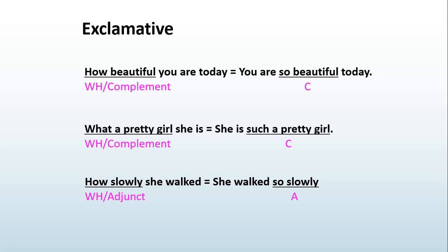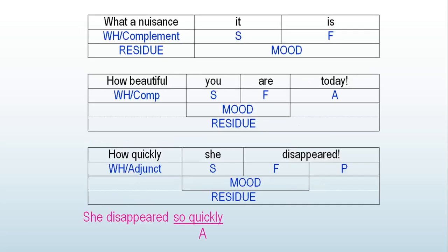When we want to change it into the form of boxes, the usual boxes that we do for exercises, it will look like this. What a nuisance it is. It is a nuisance. It is the subject, is is the finite. So compared to declarative, probably I can say that the residue here are mostly put at the beginning of the sentence, and the mood are put at the end.